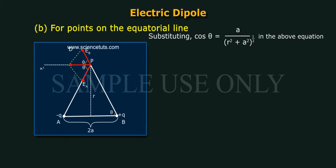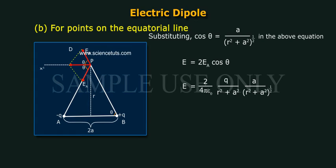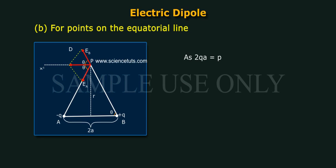Substituting cos theta equal to A by (R squared plus A squared) to the power 1/2 in the above equation, E equals 2 E_A cos theta equals 2 by 4 pi epsilon naught times Q by (R squared plus A squared) times A by (R squared plus A squared) to the power 1/2, giving E equal to P by 4 pi epsilon naught times 1 by (R squared plus A squared) to the power 3/2, along PX, where 2QA equals P (the dipole moment).